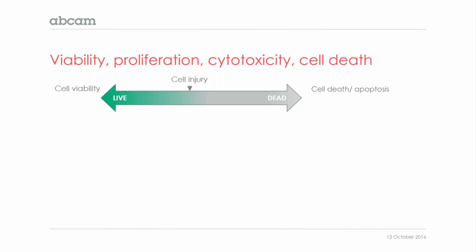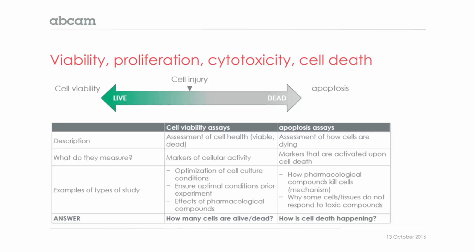Cells can die in several ways, and apoptosis represents a specific and controlled type of cell death. Sometimes there is a confusion between viability and apoptosis assays. In this table, we try to summarize and clarify what these assays are. Cell viability assays assess how healthy the cells are, whereas apoptotic assays look at how cells, which we already know are not in a healthy state, are dying.